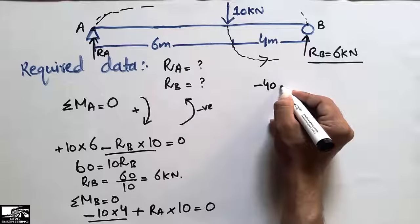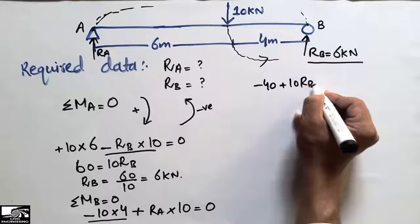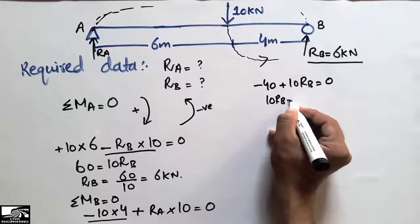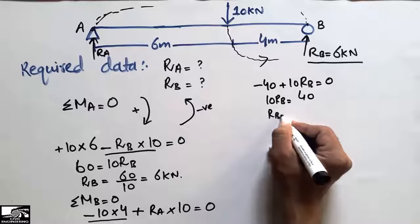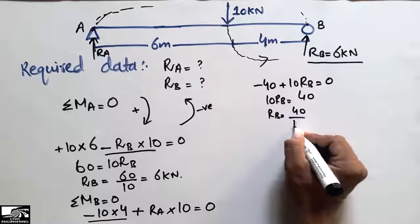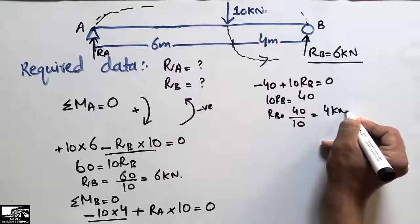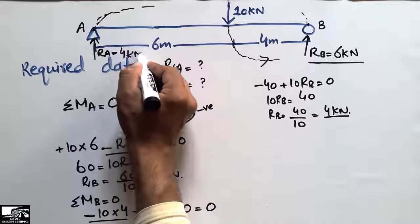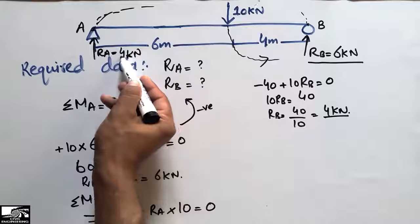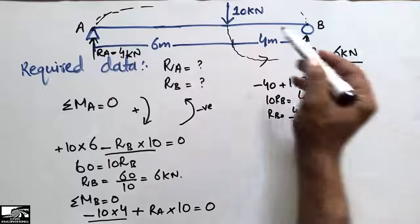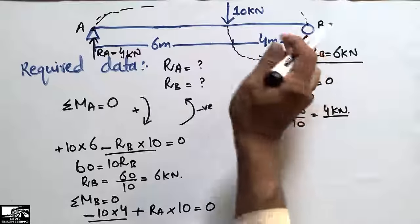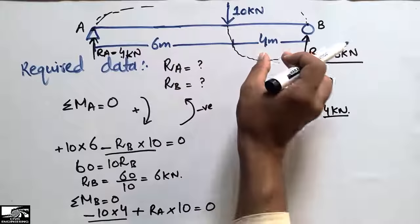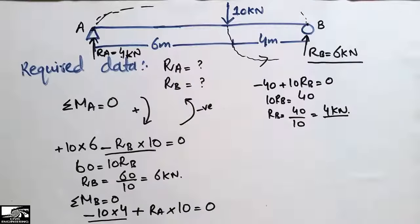Solving: negative 40 plus 10 RA equals zero, so 10 RA equals 40, giving RA equal to 40 divided by 10, which is 4 kN. So RA provides 4 kN resistance while RB provides 6 kN to the 10 kN load. RB provides more resistance because it is closer to the load — only 4 meters away versus 6 meters for RA. The nearer the support is to the load, the more resistance it provides.